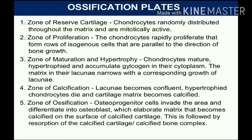The ossification plate has distinct zones. The zone of resting cartilage contains chondrocytes randomly distributed throughout the matrix that are mitotically active. The zone of proliferation is where chondrocytes rapidly proliferate and form rows of isogenous cells parallel to the direction of bone growth. In the zone of maturation and hypertrophy, chondrocytes mature, hypertrophy, and accumulate glycogen in their cytoplasm. The matrix in their lacunae narrows with corresponding growth of lacunae. In the zone of calcification, lacunae become confluent, hypertrophied chondrocytes die, and the cartilage matrix becomes calcified.